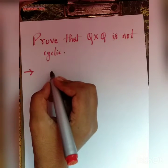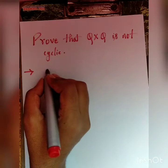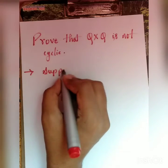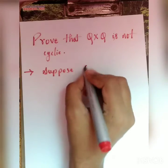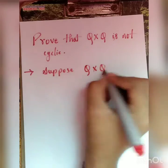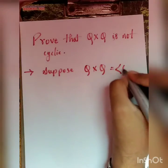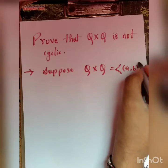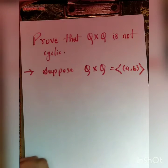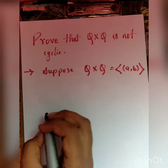Suppose Q × Q were cyclic, then Q × Q is generated by element (a, b), where a and b are rational numbers.